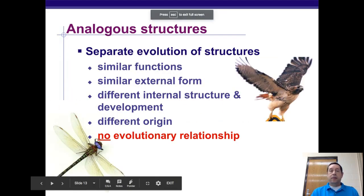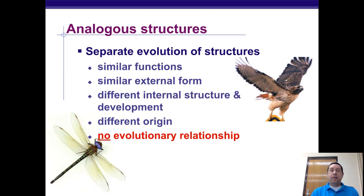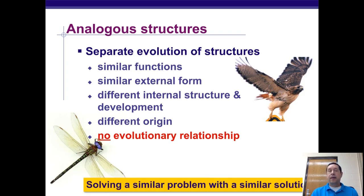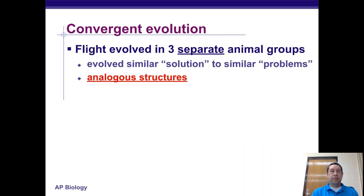With analogous structures, we have similar evolution of structures with similar function and similar form, but different internal structure, different development, different origin, and no evolutionary relationship. In the case of wings in insects and birds, just because they have wings doesn't mean they're closely evolutionarily related. This is evidence of convergent evolution — solving a similar problem with a similar solution. In fact, flight evolved in three different groups.